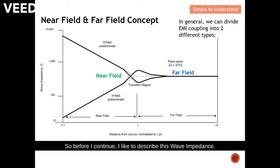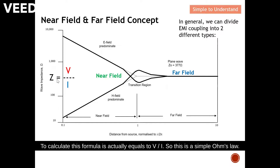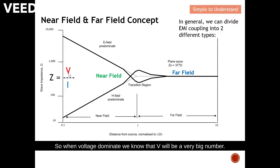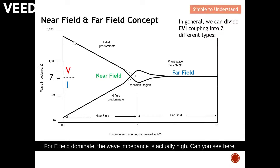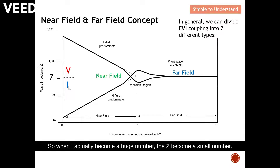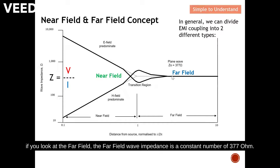Before I continue, I'd like to describe wave impedance. Wave impedance, which is Z, stands for impedance. To calculate this, the formula is actually Z equals E over I — this is simply Ohm's law. When E field dominates, which means voltage dominates, V will be a very big number, so Z will be a big number. So for E field dominant, the wave impedance is high. When H field dominates, the current I will be a huge number compared to E, so Z becomes a small number. Therefore for H field dominant the wave impedance is very small. And finally, looking at the far field, the wave impedance is a constant 377 ohms.